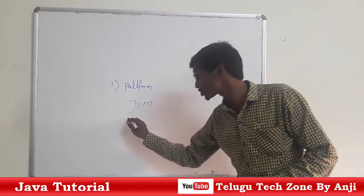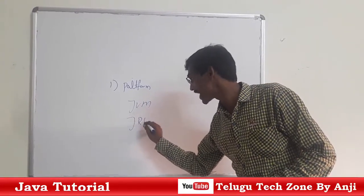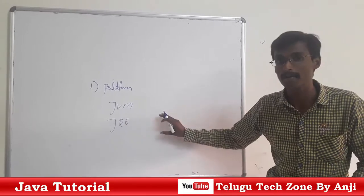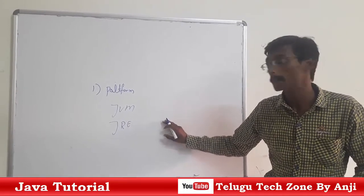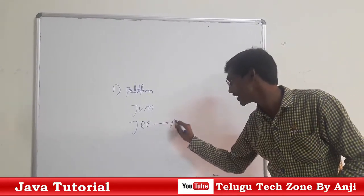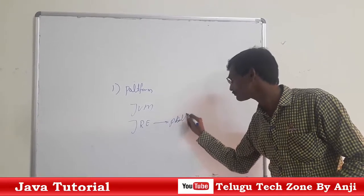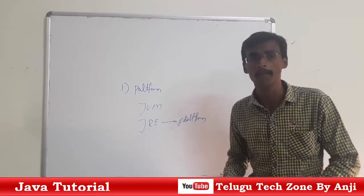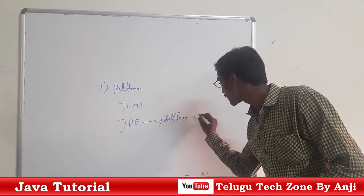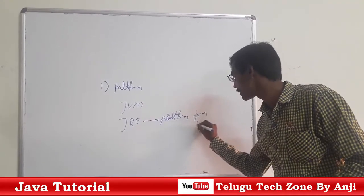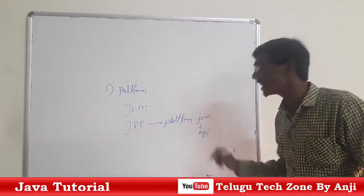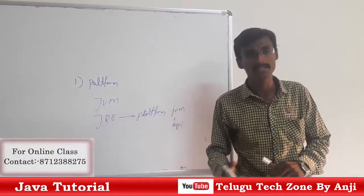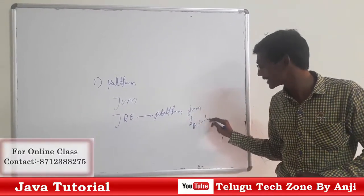The next component is JRE. JRE stands for Java Runtime Environment and is also called a Platform. A platform is a combination of JVM and API. API is nothing but Application Program Interface, also called a Library.